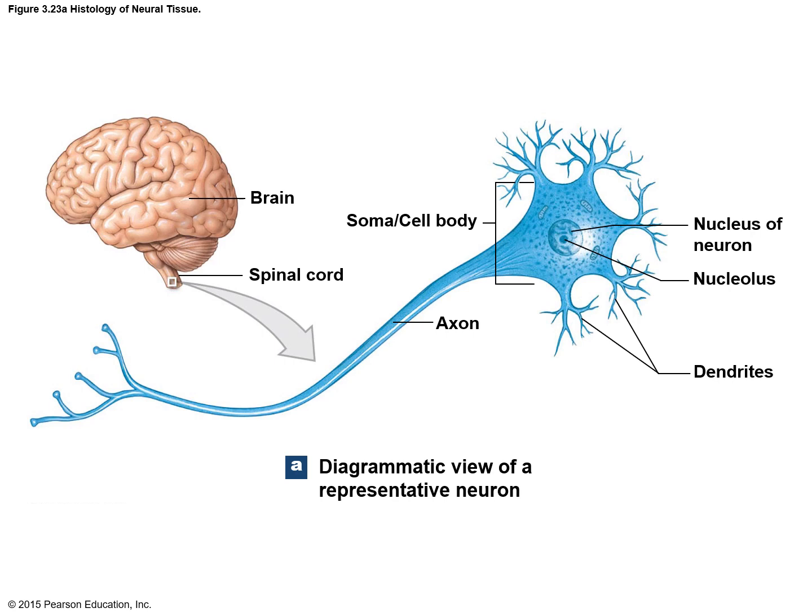This figure shows a neuron. The blue colored structure is the neuron. On the right side, the broad expanded part is the soma or cell body, which contains the nucleus and nucleolus. The short multiple processes present on all sides of the cell body are the dendrites, which receive information for the neuron. On the opposite side, one long tail-like process leaves the cell body — this is the axon, which transmits the signal away from the neuron.